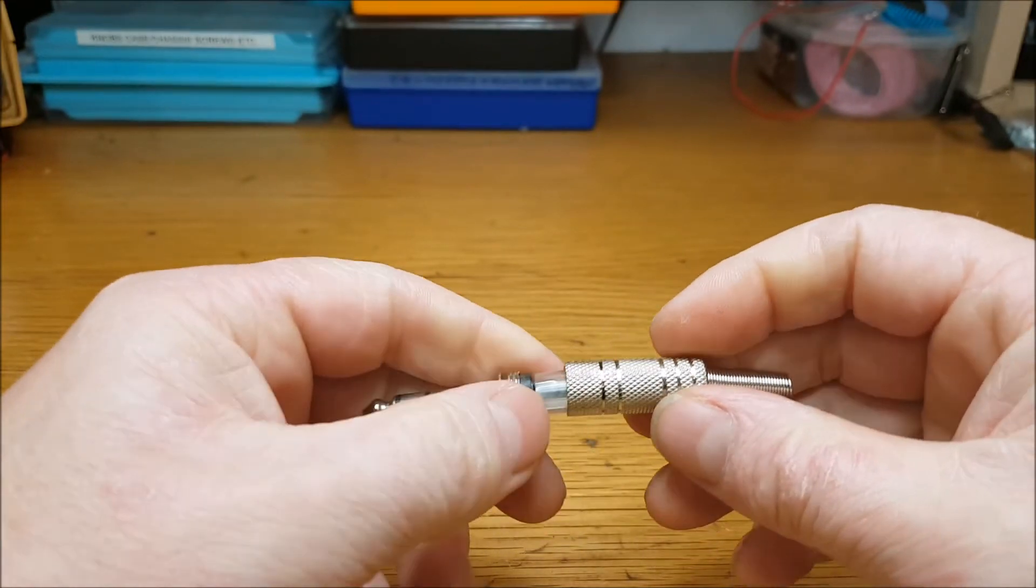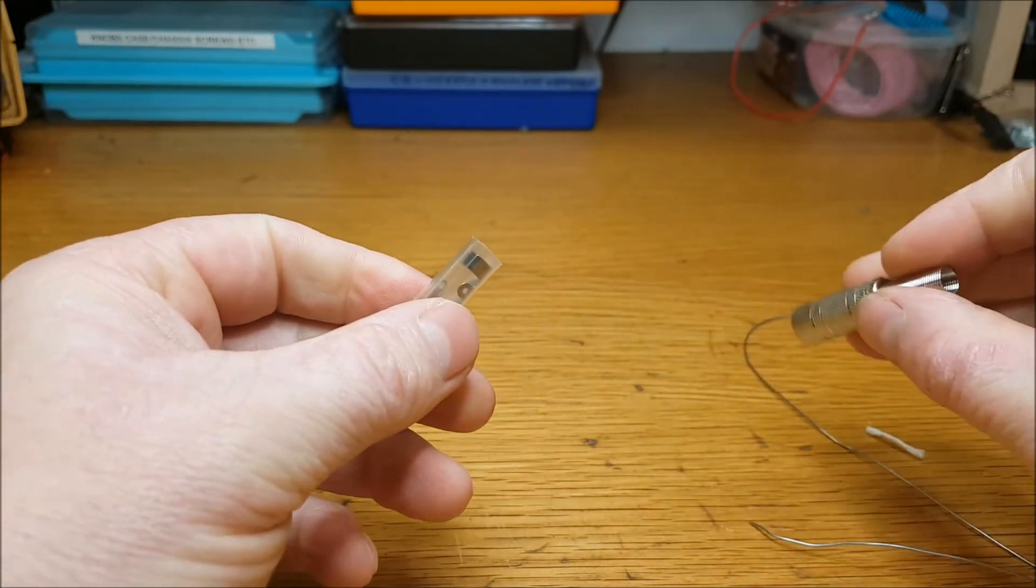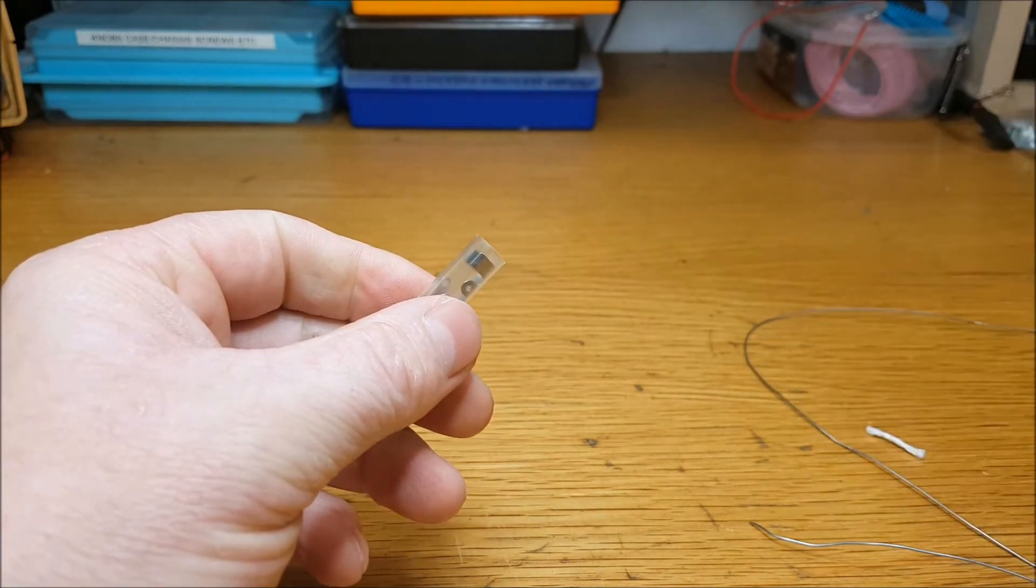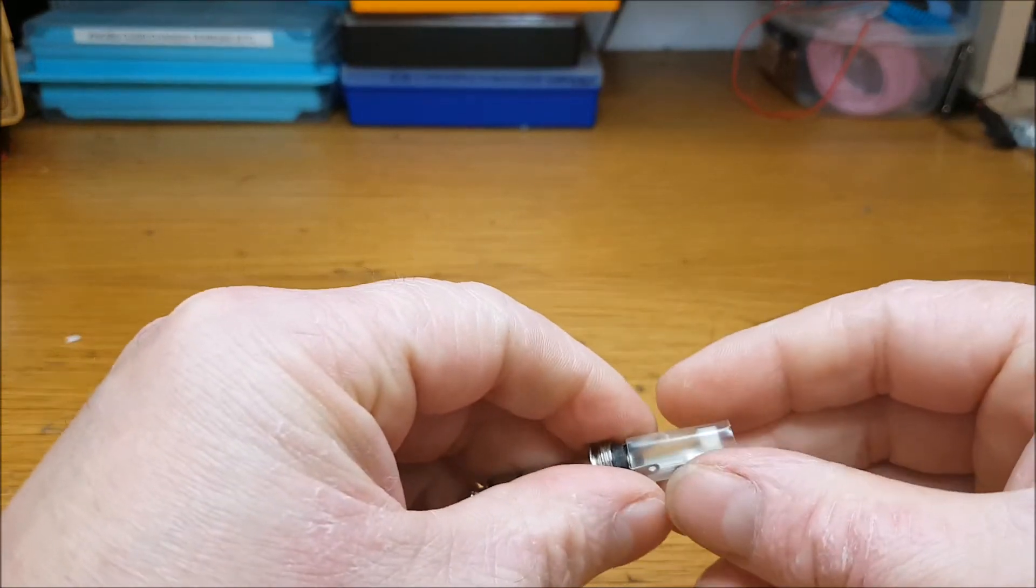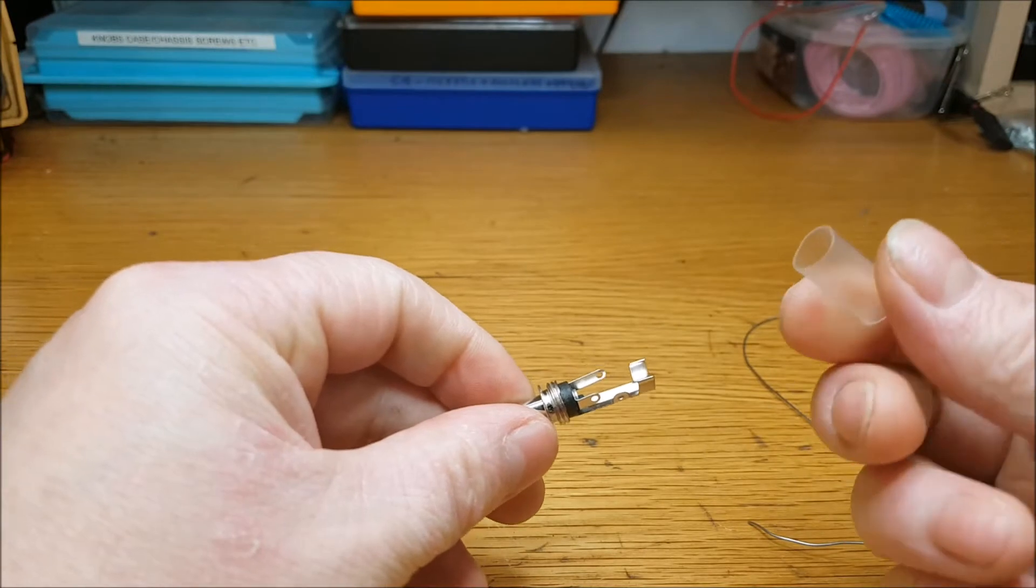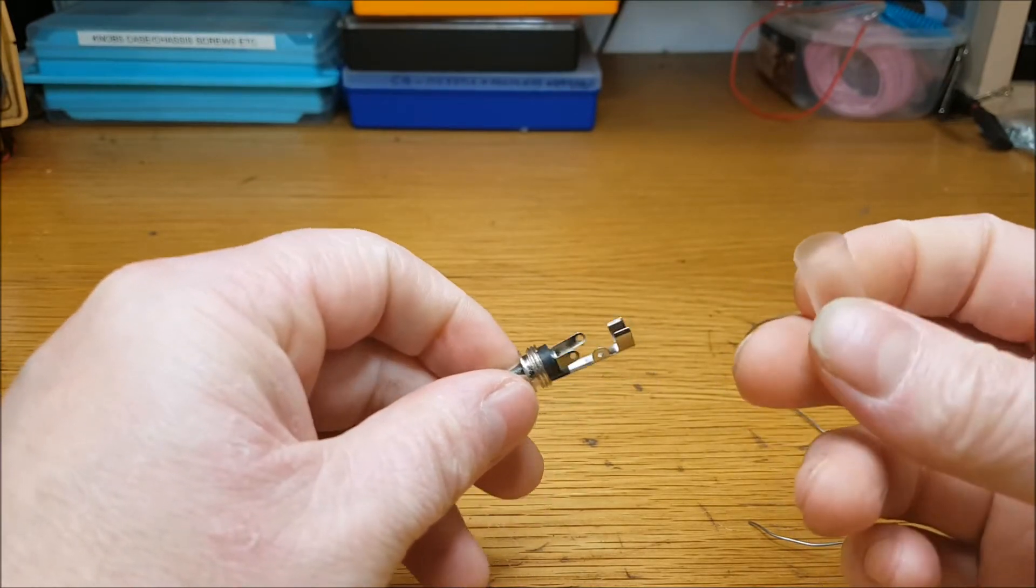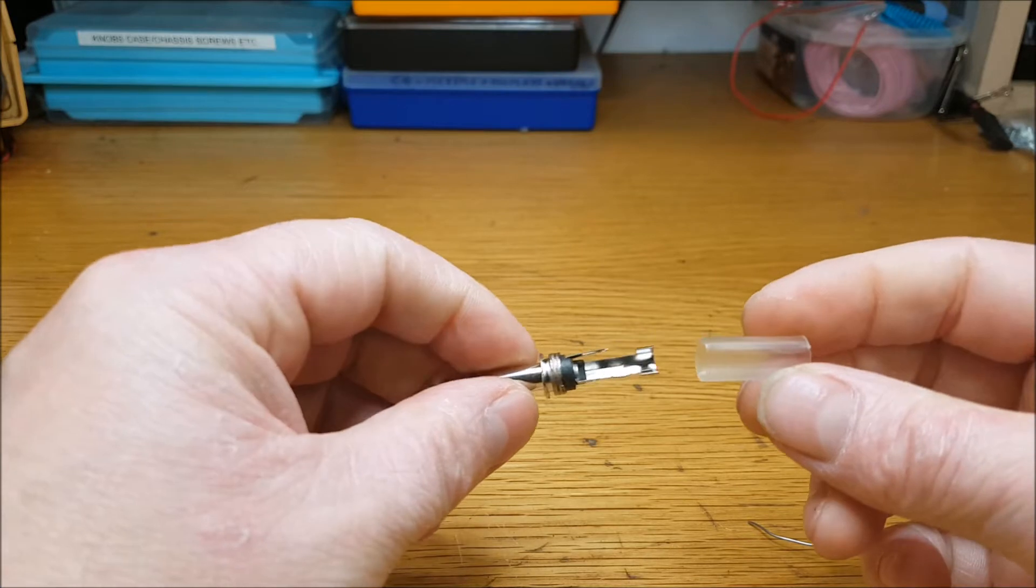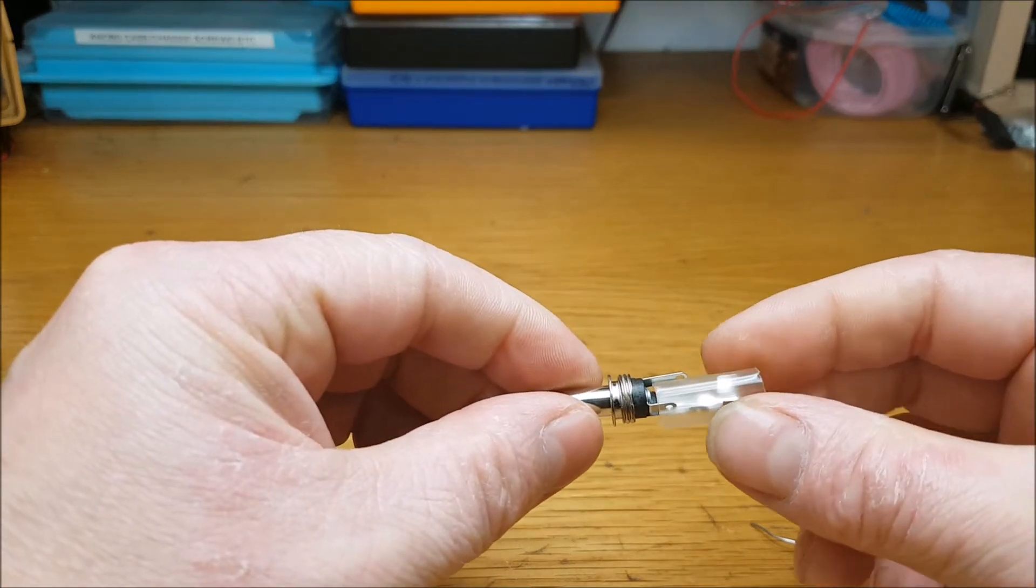They always come with either a plastic or a cardboard ring like this. The idea of that is it slips on over here when you have the connections made, and it stops the wires touching the shell and shorting out.